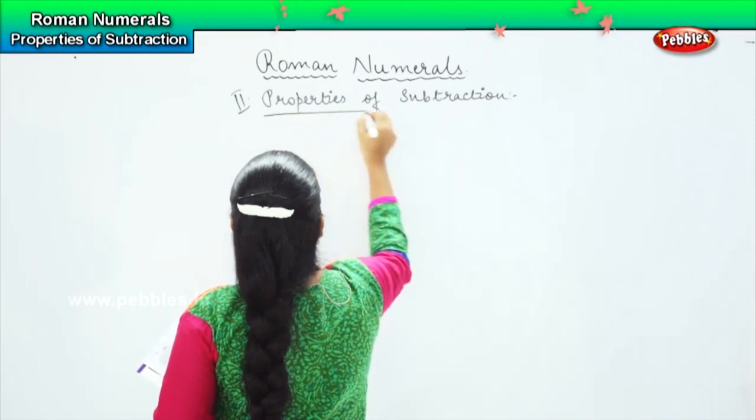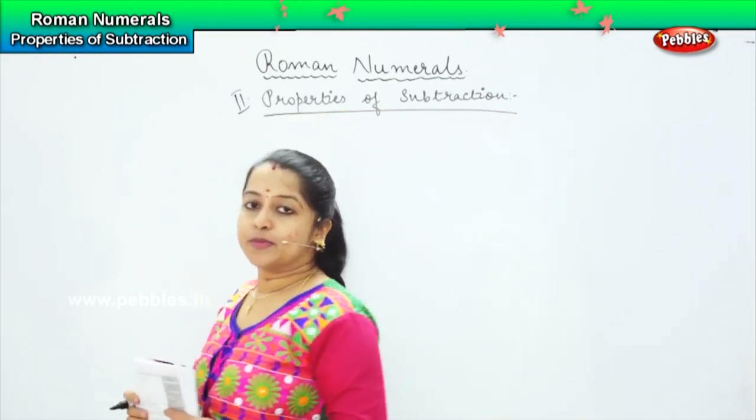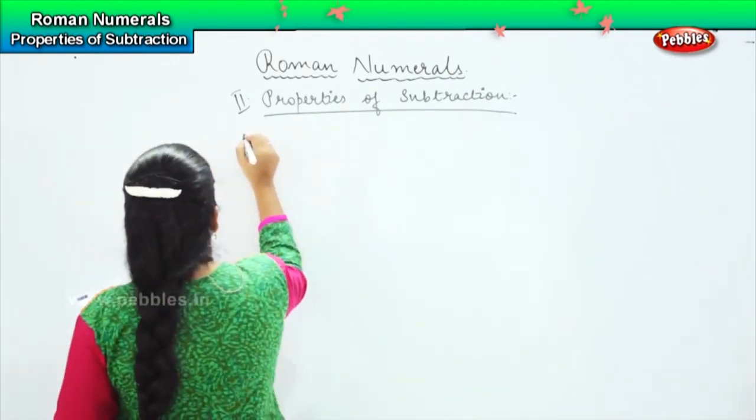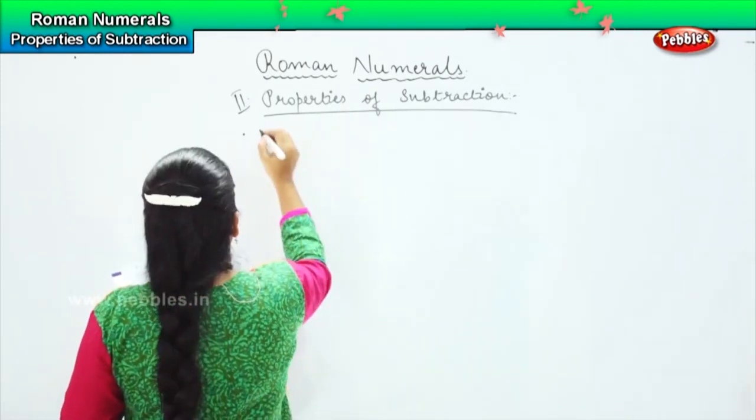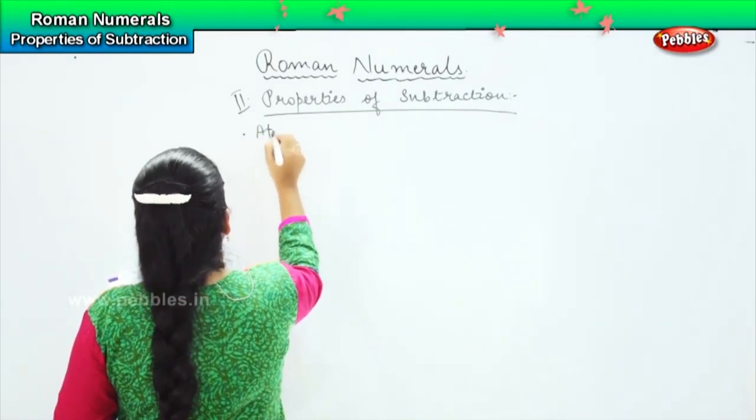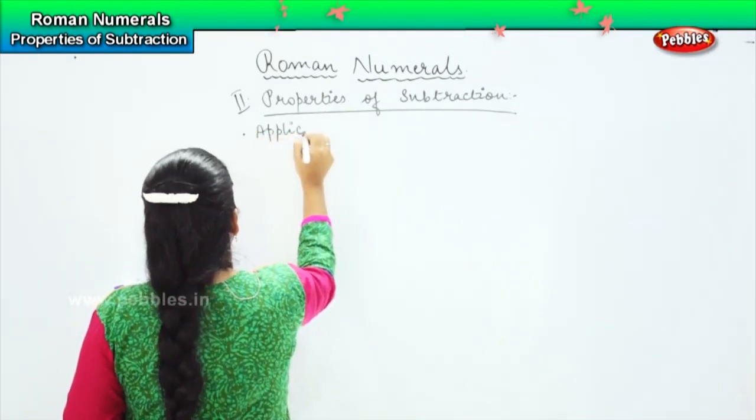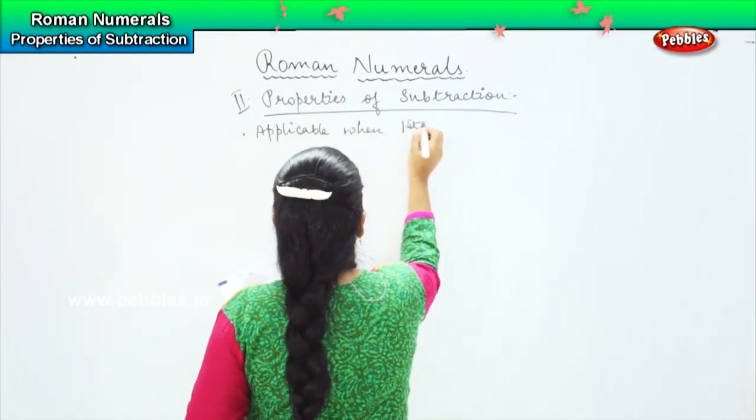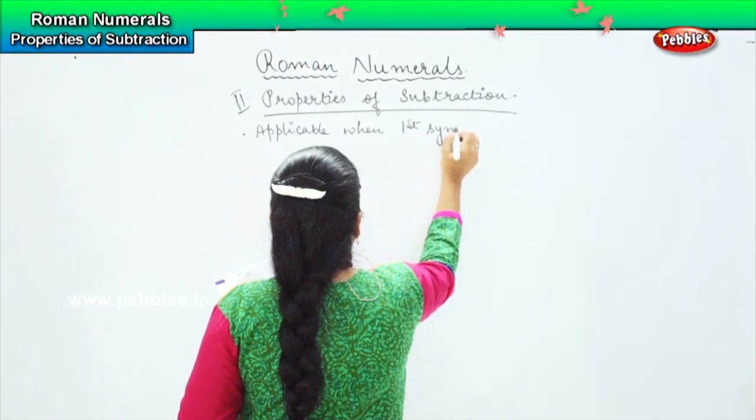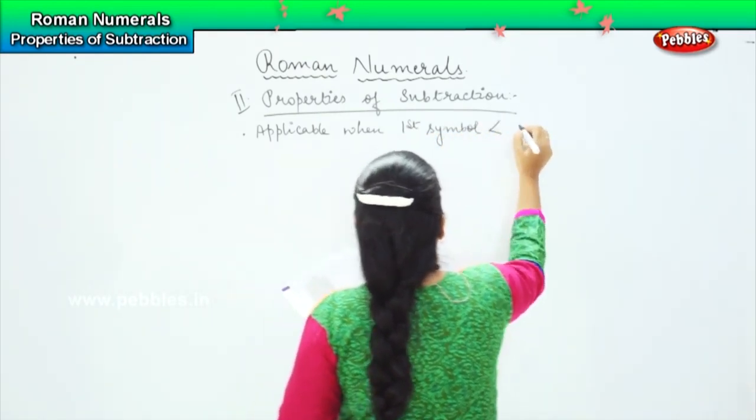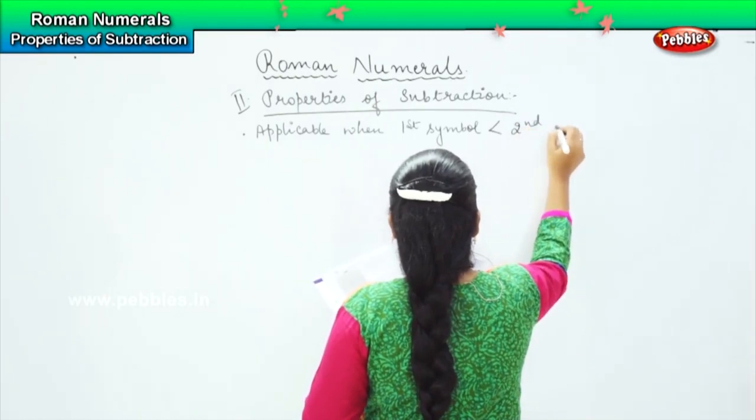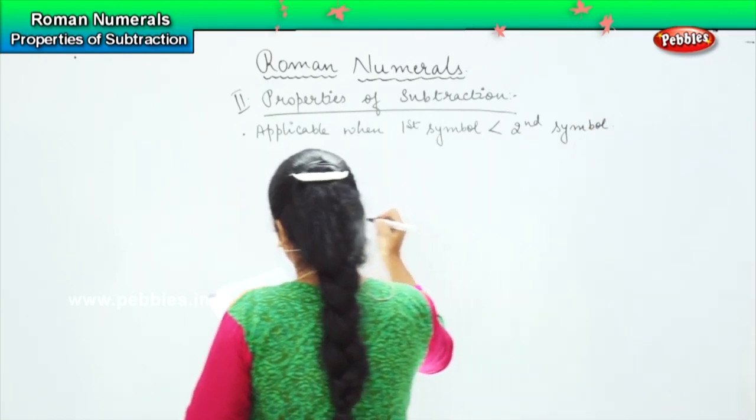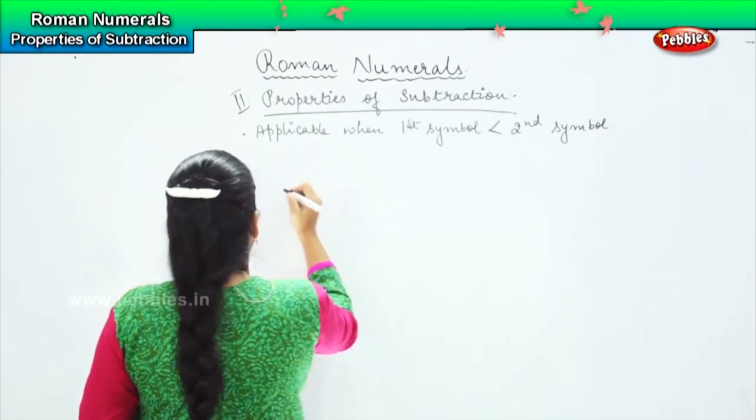Properties of subtraction will be opposite of what we have learned in the properties of addition. The very first property of subtraction says it is applicable when the first symbol is less than the second symbol.